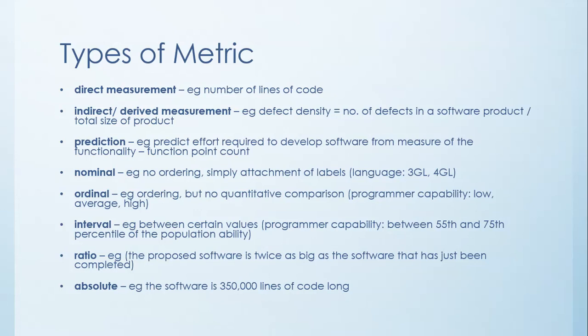The other kinds of metrics are predictive type metrics. So you could predict the effort required to develop the software from measure of the functionality. So like the number of functions that this product will have in it for example.